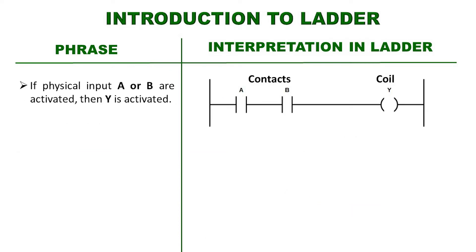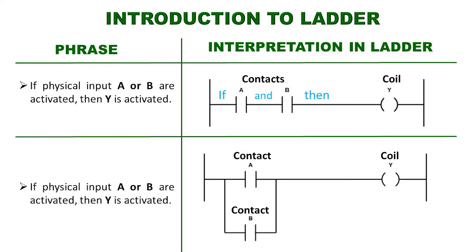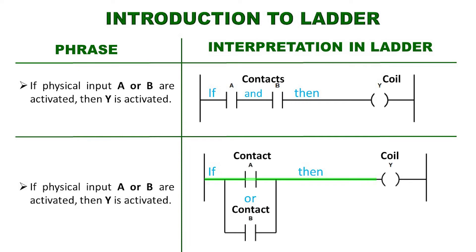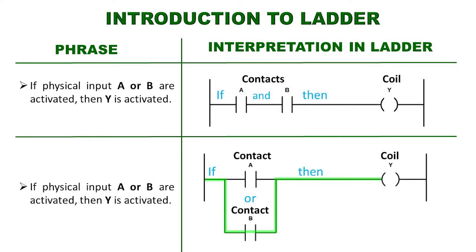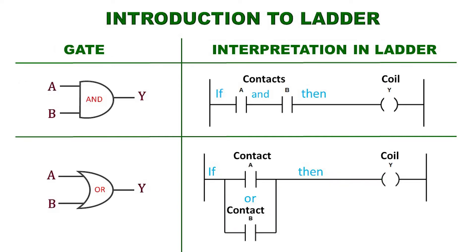Another proposition would be: if the physical inputs A and B are activated, then Y is activated. This could be represented in the ladder diagram with two normally open contacts A and B connected in series and a Y coil, interpreted as: if contacts A and B both receive a logic one, they close and can activate coil Y. Or with contacts A and B connected in parallel, if either contact B receives a logic one, it closes and can also activate coil Y. These two diagrams represent logic gates — the first represents the AND gate and the second the OR gate.